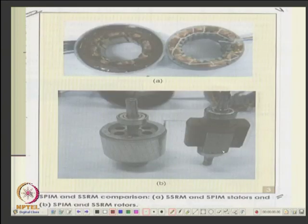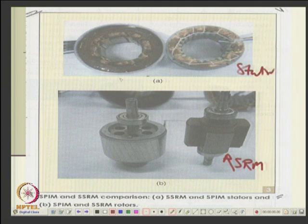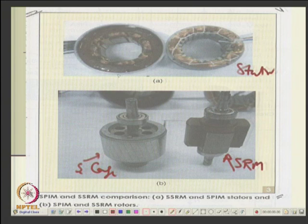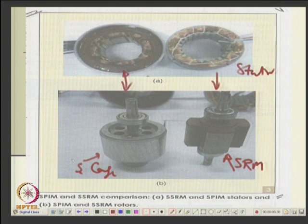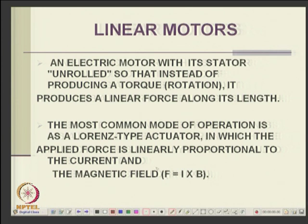Switched reluctance motors are similar to stepper motors but operate at higher speed as energy converters. Features include low construction complexity, sensorless operation, high-speed operation, and high startup torque. Applications include centrifuges, washing machines, small appliances, and fans. Linear motors use the force equation F = I × B (Lorentz force). They offer highly controllable acceleration and high power output, with direct conversion to linear motion. The most common actuator type is the Lorentz actuator.